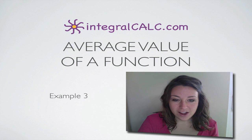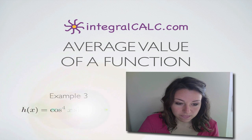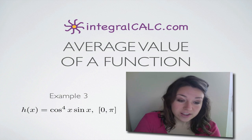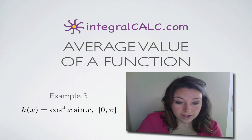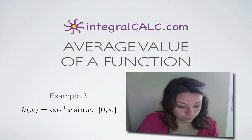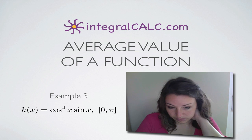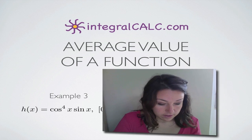Today we're going to be doing another average value of the function problem. The function that we're given is h of x equals cosine to the fourth x times sine of x on the range zero to pi.